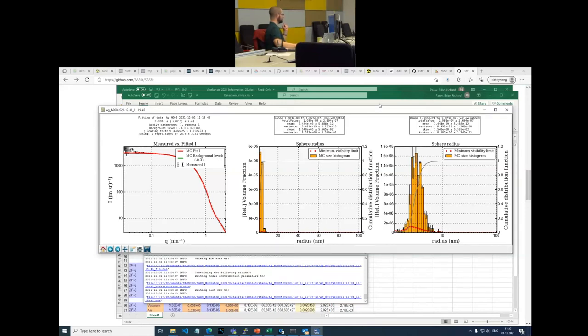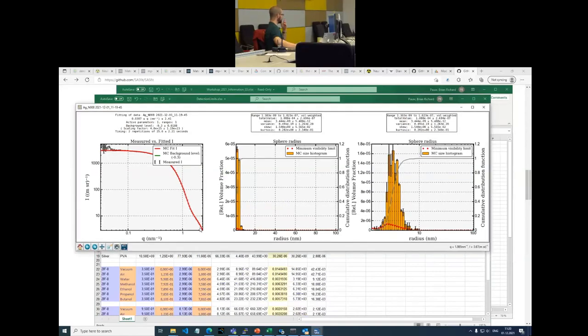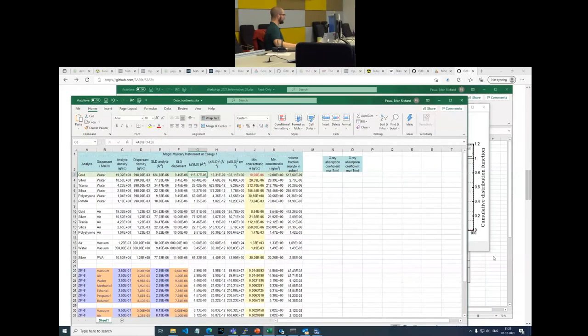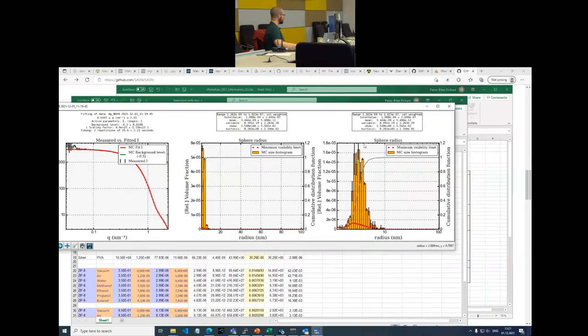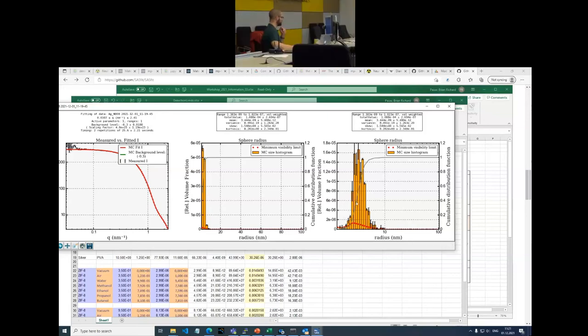So here we see that we've actually matched our data quite well. Here we have a distribution with a linear radius axis and here we have a distribution with a logarithmic radius axis. And we can see that we have one population in here, which is, if I click on the right of place, there we go, which has a mean radius of 3.4 nanometers. So a mean diameter of about 7.